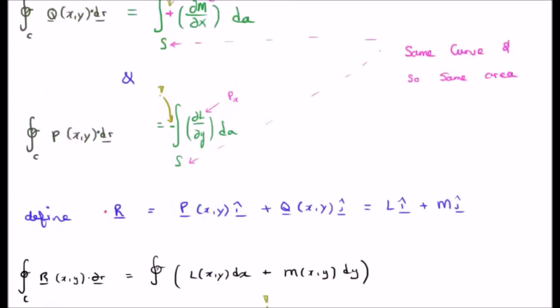Now let's see what would happen if we took the closed line integral of the vector field capital R dot dr. Well, capital R now has both an i-hat component and a j-hat component. So when you dot it with small r, you'll still have two components, one in the x and one in the y, just like we have here. So you'll have the closed line integral of l dx and m dy.